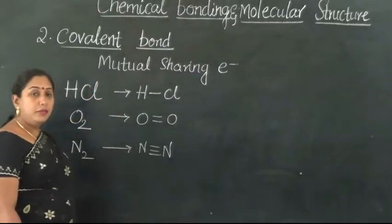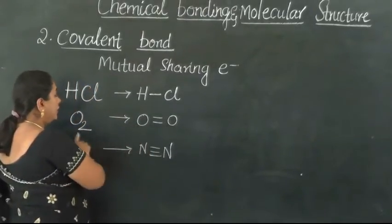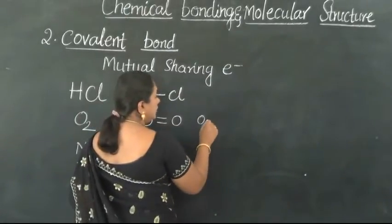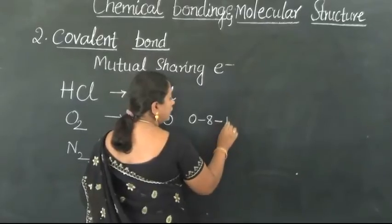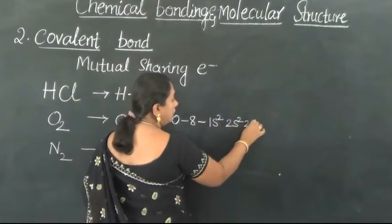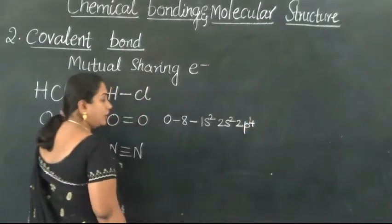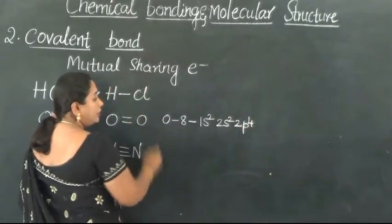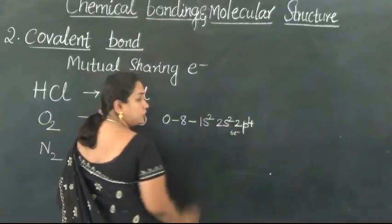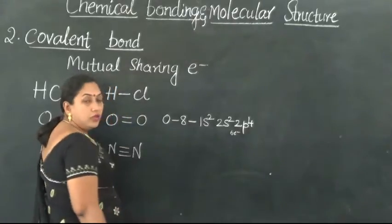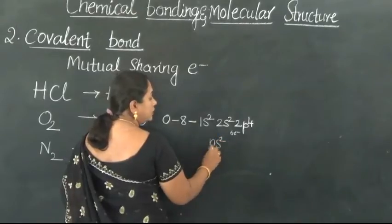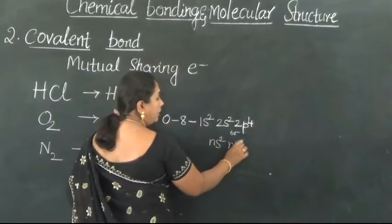Let us understand the doubly covalently bonded molecule, namely Oxygen. The atomic number of Oxygen is 8 and its electronic configuration is 1s2, 2s2, and 2p4. From the electronic configuration, the atom of Oxygen contains only 6 electrons in its outer shell. It is running short of 2 more electrons to obtain the stable octet configuration of ns2 and np6.